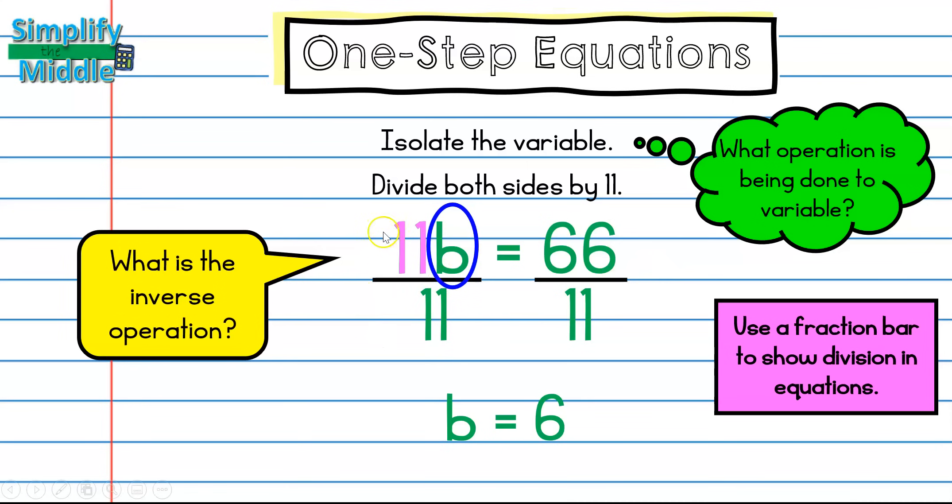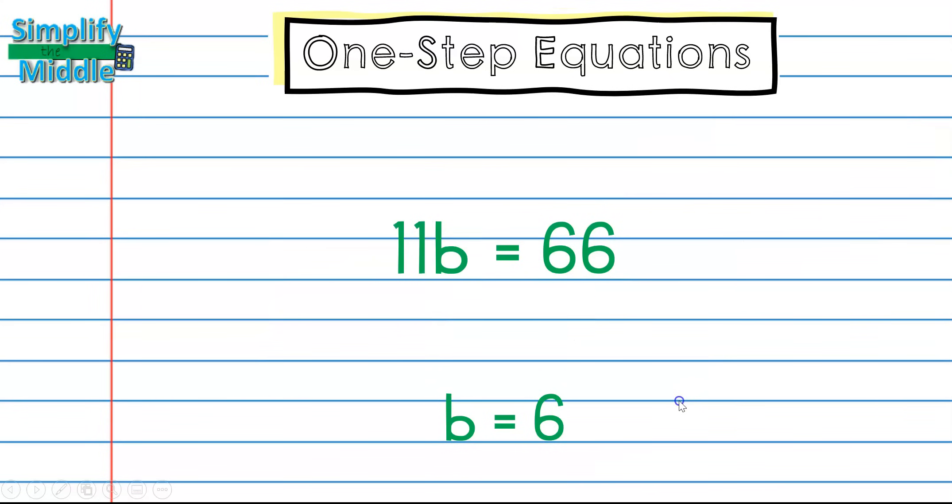The reason that these are going to cancel out is because 11 divided by 11 is 1, and we know that there is a coefficient of 1 in front of all variables that have no number in front of them normally. So this makes sense. 1b is equal to 6, or just b is equal to 6. Remember, I can substitute that answer in, and 11 times 6 is 66. So I'm correct.